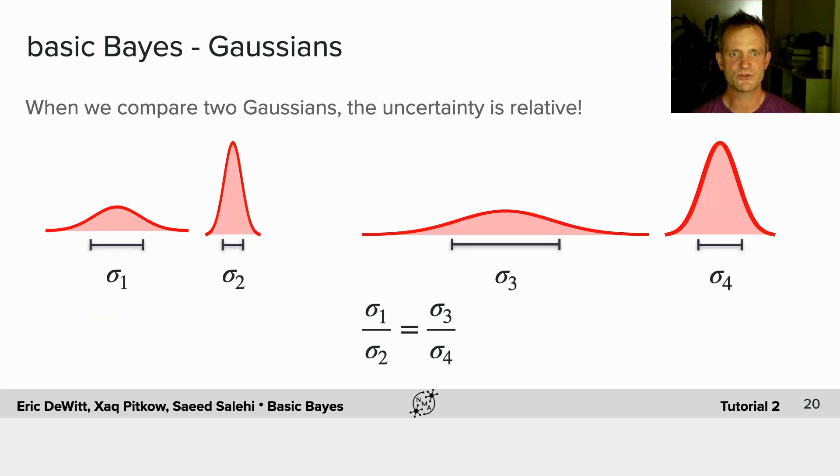Importantly, when we compare two Gaussians, the uncertainty is relative. So the two Gaussians on the left can have the same relative information as the two Gaussians on the right.